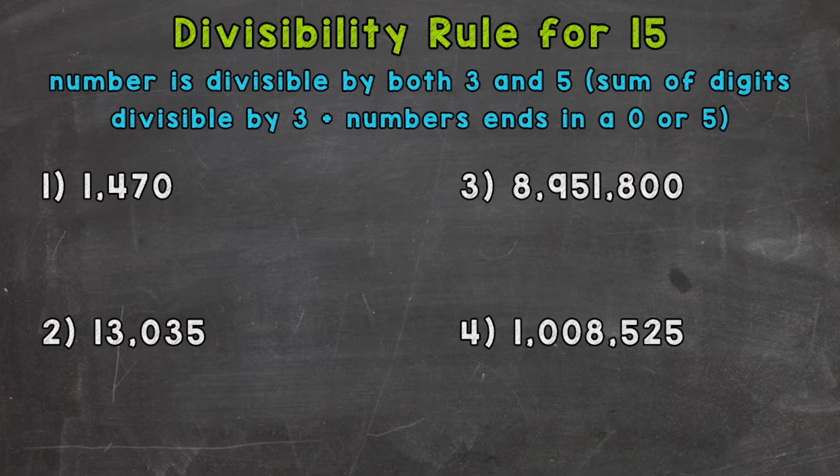So if a number is divisible by both three and five, that means the number is divisible by 15 as well. As a reminder, our divisibility rule for three: we need to find the sum of the digits, and if that sum is divisible by three, the original number is divisible by three. And for the rule for five: if a number ends in a zero or five, it's divisible by five.